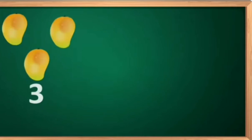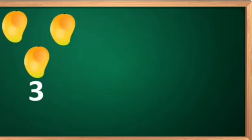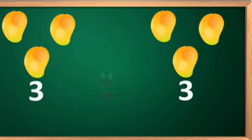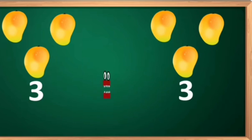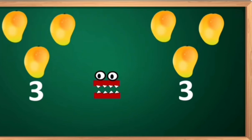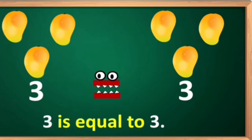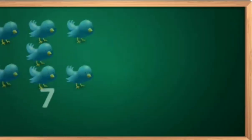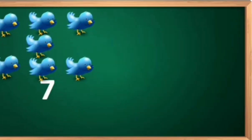There are some more examples. There are three mangoes, and the other side there are also three mangoes. Both sides have an equal number of mangoes. So which side will the crocodile open its mouth? No side — there will be an equal to sign.